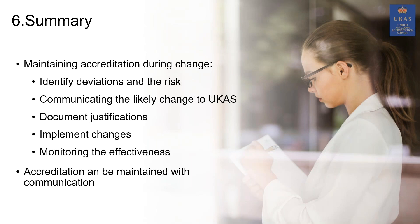In summary, maintaining accreditation during change is fundamentally about communicating with your assessment manager as soon as you know anything. From your perspective, it's identifying deviations and the risk associated with them, documenting that deviation, and justifying your approach. Communicate the likely change to UCAS, document the justification, implement any changes, and monitor the effectiveness. What we want to get across is that accreditation can be maintained with communication. Make your assessment manager aware as early as possible so that any changes that need to be reflected in your schedule of accreditation can be considered and factored in. Your assessment manager is absolutely there to assist you.